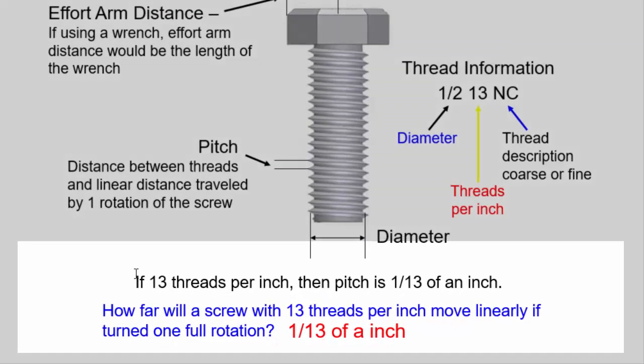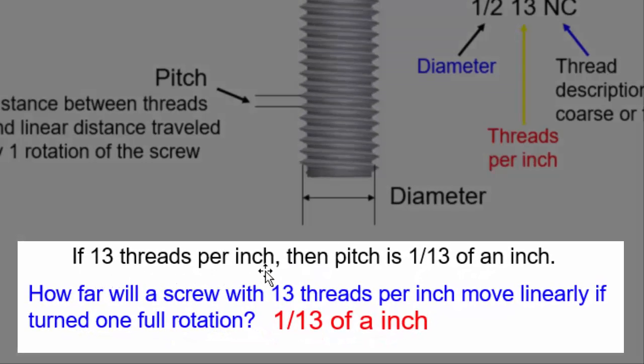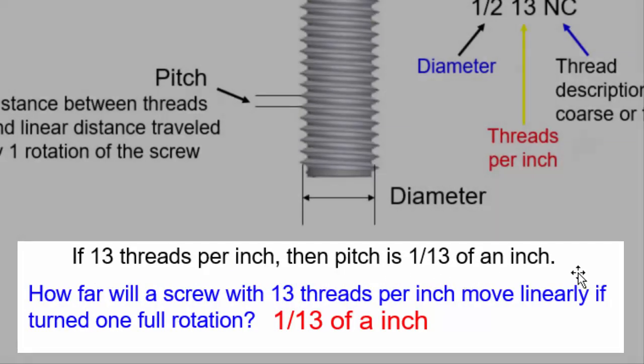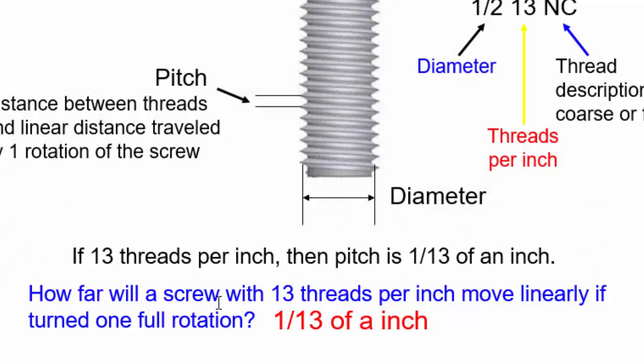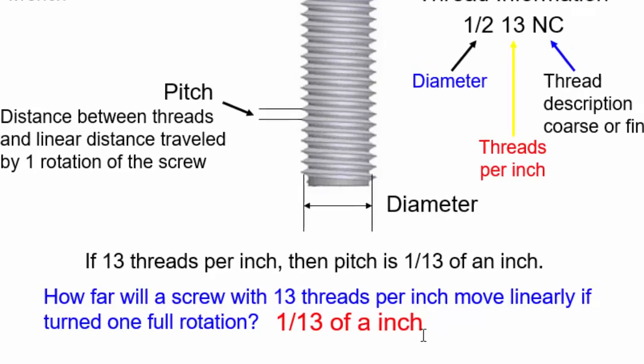So this is good to know. If 13 threads per inch, then the pitch is 1/13th of an inch. So how far will the screw with 13 threads per inch move linearly if turned one full rotation? The answer is 1/13th of an inch.